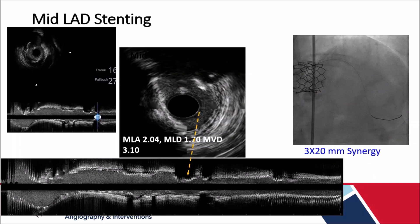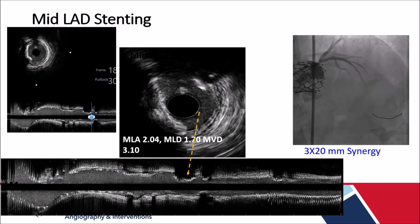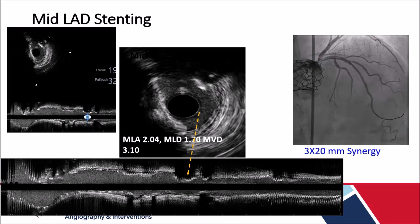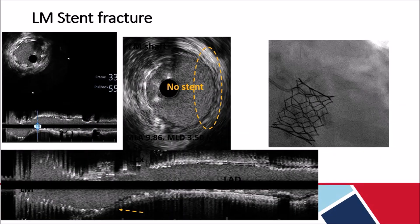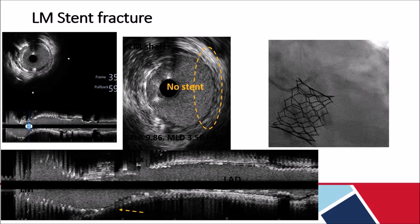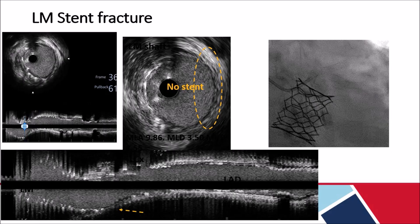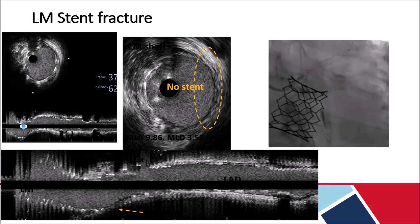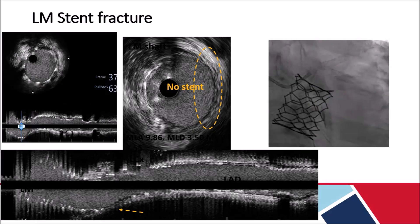IVUS across the LAD showed an MLA of 2.04 mm² across the mid-LAD, which was treated with a 3×20 mm Synergy stent. IVUS run across the left main clearly demonstrated the stent fracture, which was also evident in fluoroscopy.